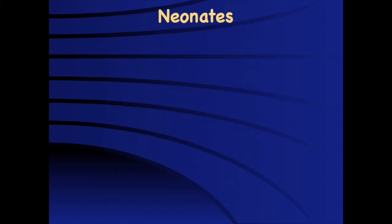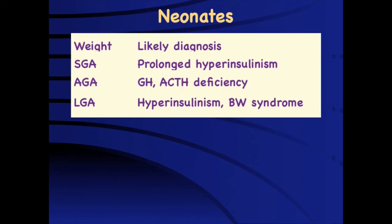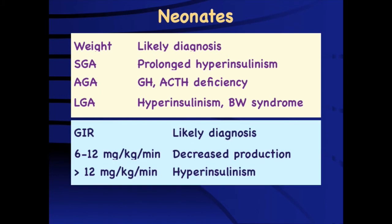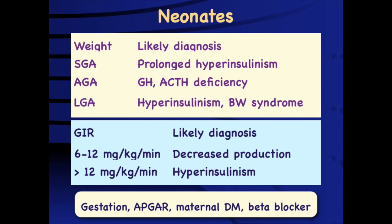The most important thing to assess in a neonate with hypoglycemia is birth weight. A large for gestational age child raises the possibility of hyperinsulinism or Beckwith-Wiedemann syndrome. A small for gestational age child should raise the possibility of prolonged hyperinsulinism. Children with endocrine insufficiency are usually appropriate size at birth. The most important other factor is the glucose infusion requirement: if physiological at 6–10 mg/kg/min, we're dealing with a decreased substrate issue; if more than 12 mg/kg/min, hyperinsulinism should be considered. Risk factors for neonatal hypoglycemia include prematurity, birth asphyxia, maternal diabetes, and maternal beta-blocker use.